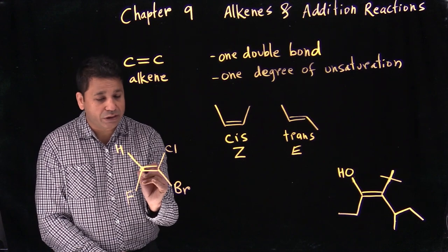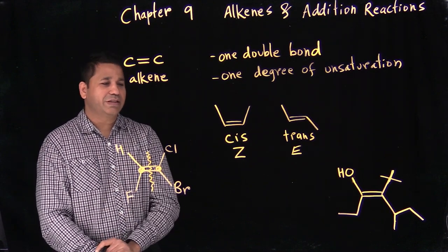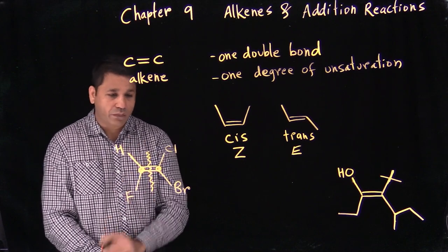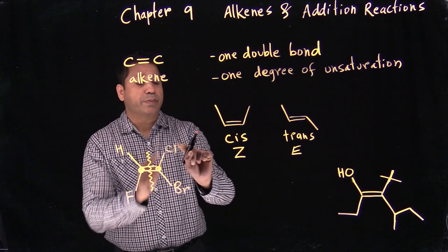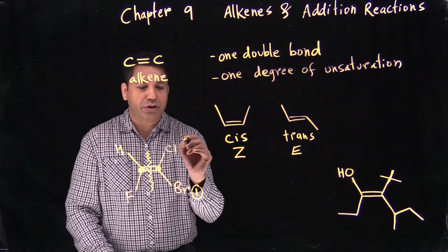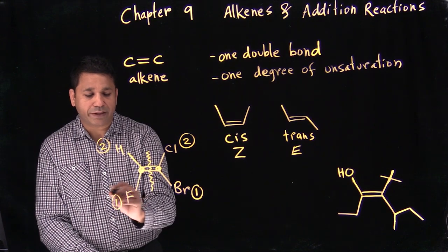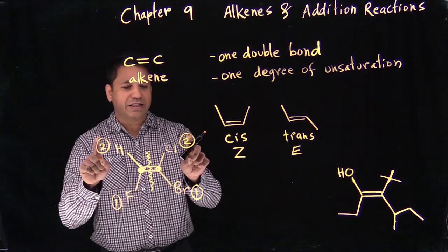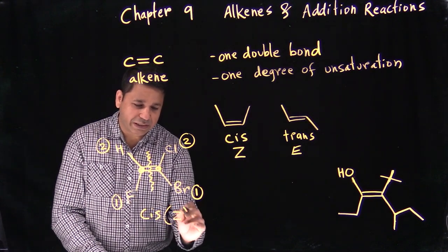We focus on the two carbons where the alkene is and divide right in the middle. Each carbon has two groups: one carbon has chlorine and bromine, the other has hydrogen and fluorine. We assign priorities — bromine gets priority one, chlorine gets two; fluorine gets priority one, hydrogen gets two. If the same-priority groups face the same side, this is cis, or Z.